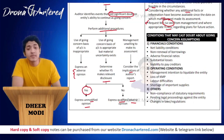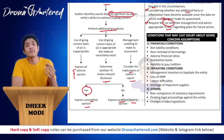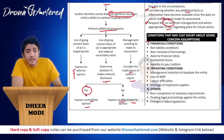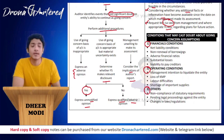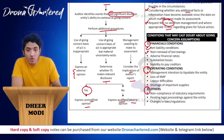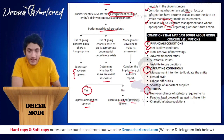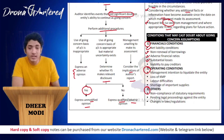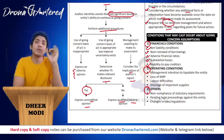Next is conditions that may cast doubt about the going concern assumption — in what conditions we might have a doubt. There are three conditions: financial conditions, operating conditions, and others. Financial conditions relate to books of accounts: a net liability condition or negative net worth, non-renewal of borrowing where past lenders are not lending now, any adverse financial ratios, substantial losses in the books of accounts, or inability to pay creditors — meaning you are not able to pay your working capital.